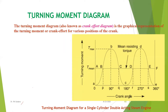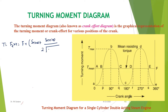Welcome back. In this lecture we'll talk about the turning moment diagram, also known as the crank effort diagram, which is the graphical representation of turning moment for crankshaft torque for various positions of the crank. The turning moment is given by T equals F_T multiplied by r, or F_r times sine(theta) plus sine(2*theta) over 2*sqrt(n² - sin²(theta)). Here theta is the angle turned by the crank and T is the torque, so T is a function of theta, and the plot between T and theta is known as the turning moment diagram.